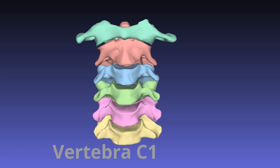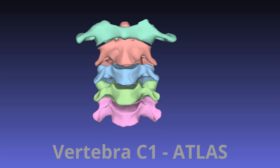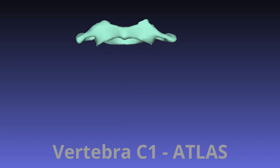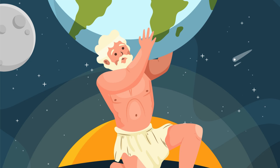C1 atlas. The first cervical vertebra, also known as the atlas, bears little resemblance to any other vertebra and is therefore classified as an atypical vertebra. The unusual name for this bone comes from a deity in Greek mythology, Atlas. C1, or atlas of the spine, supports the spherical skull, just as the Greek god Atlas carried the weight of the world on his shoulders.